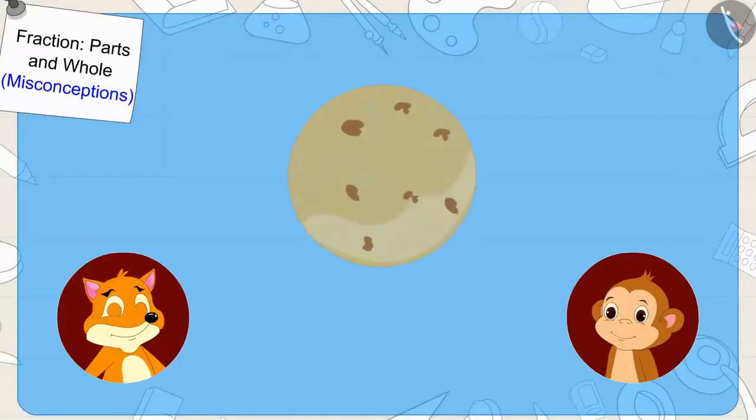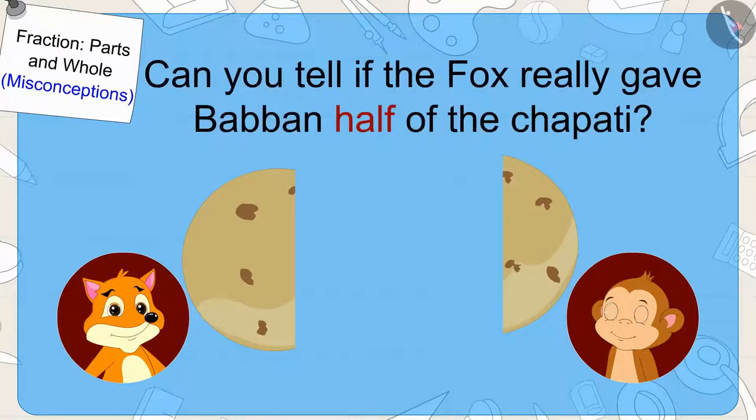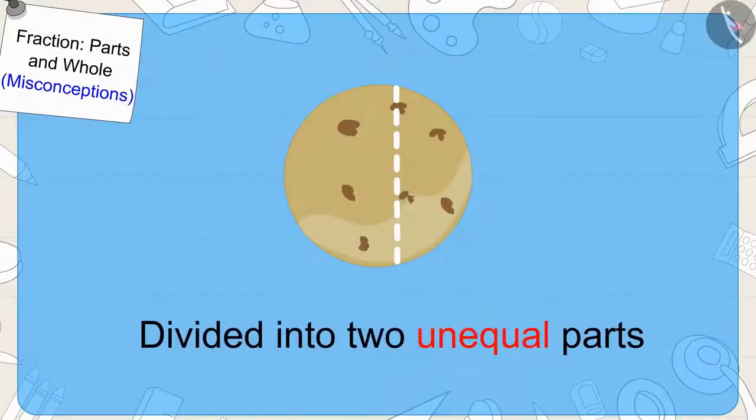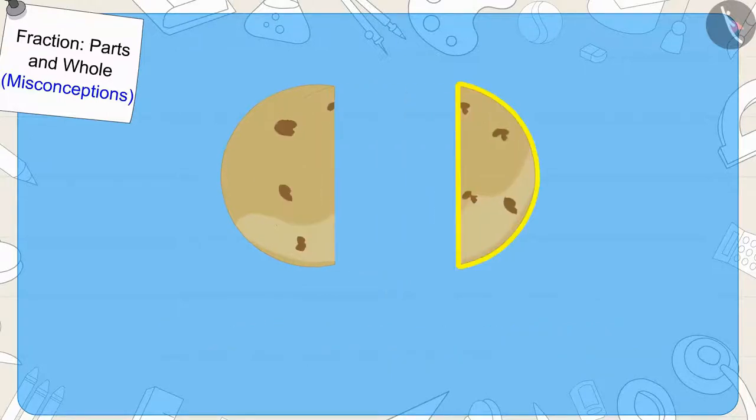Now, both of them decided to divide the chapati in two halves. The fox divided the chapati in two parts like this and gave one part to Babban. Can you tell if the fox really gave Babban half of the chapati? Exactly, the fox did not give half part to Babban. The fox did not divide the chapati into two equal parts. So, the portion that Babban got was not half of the chapati.